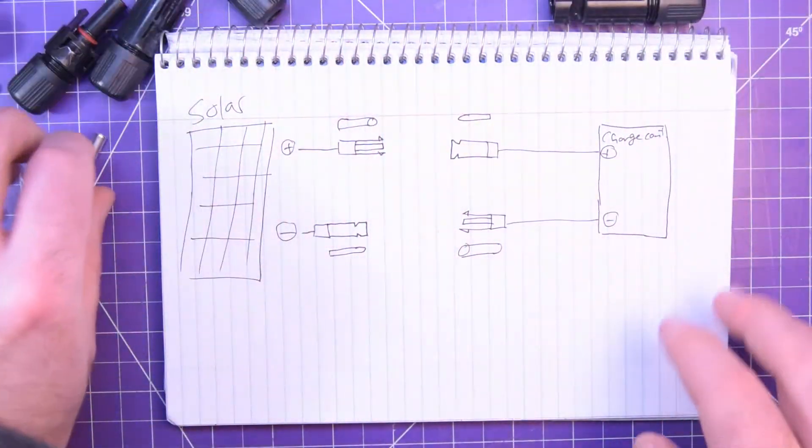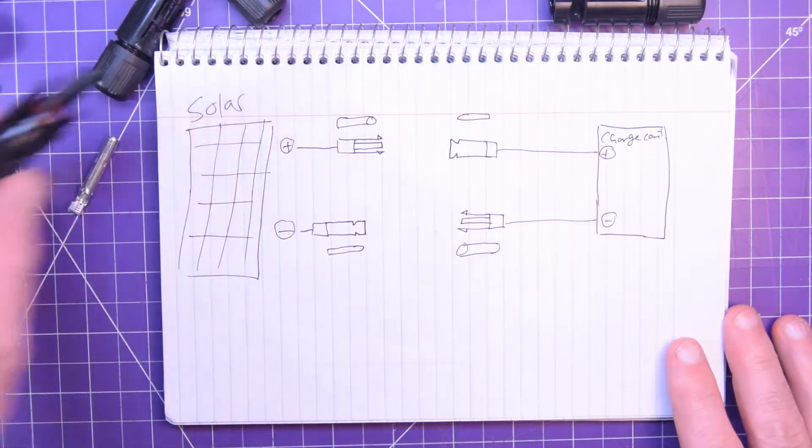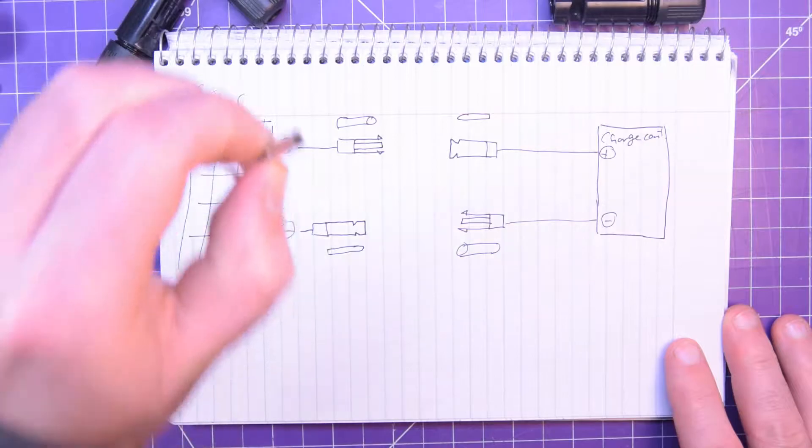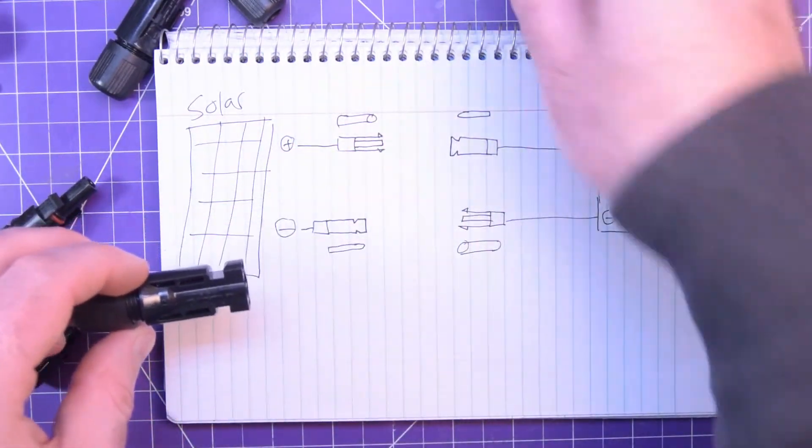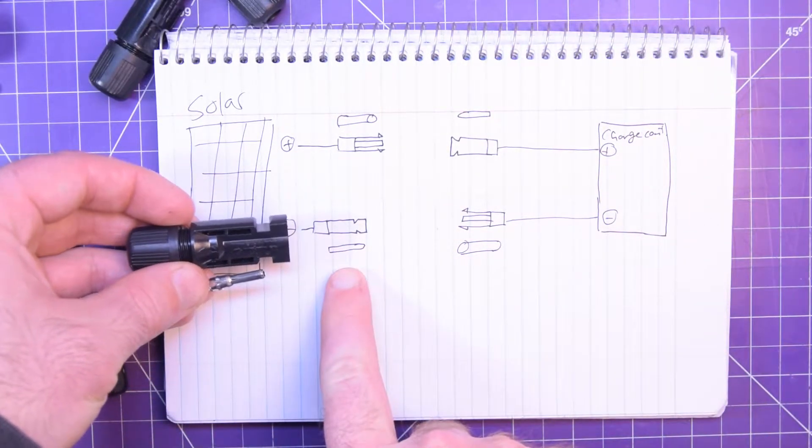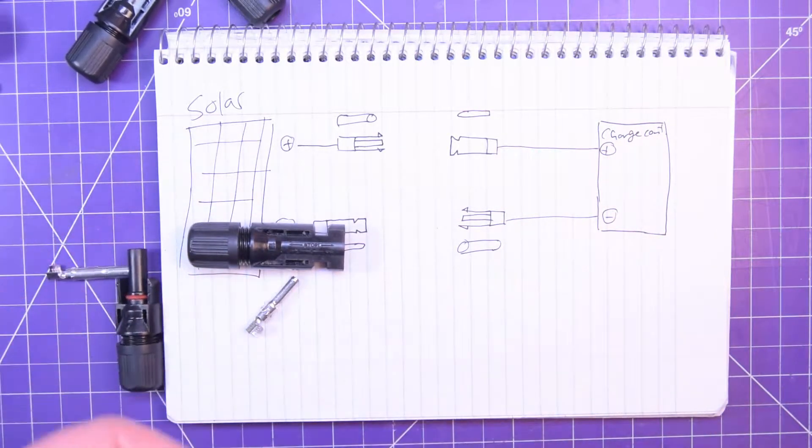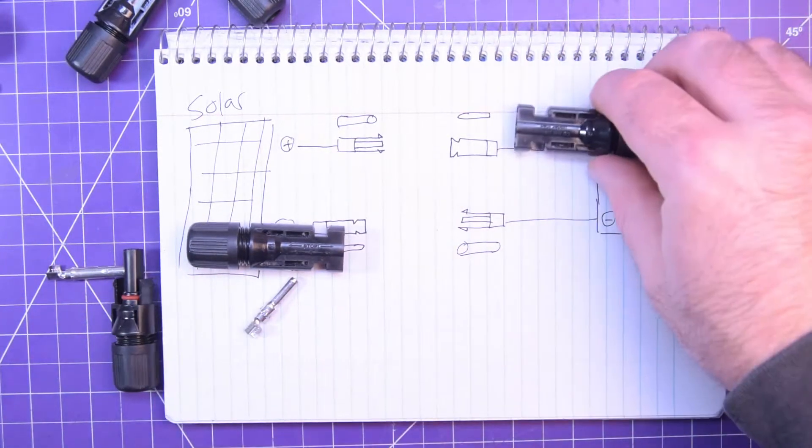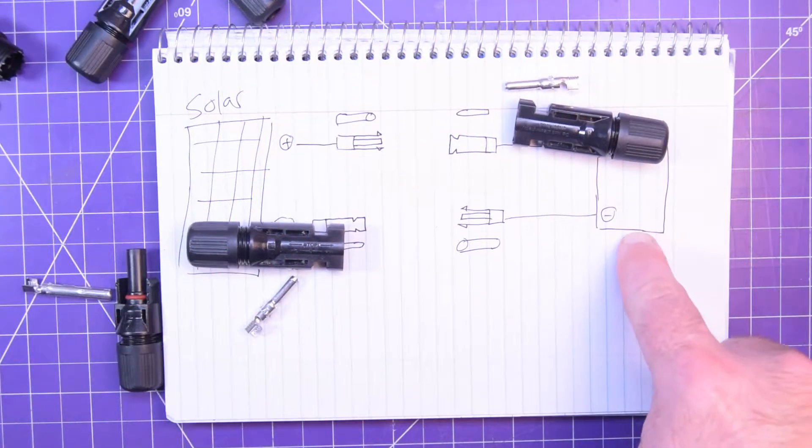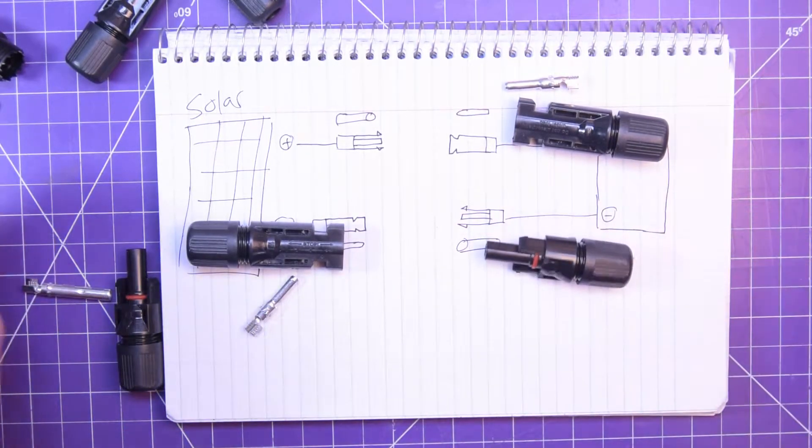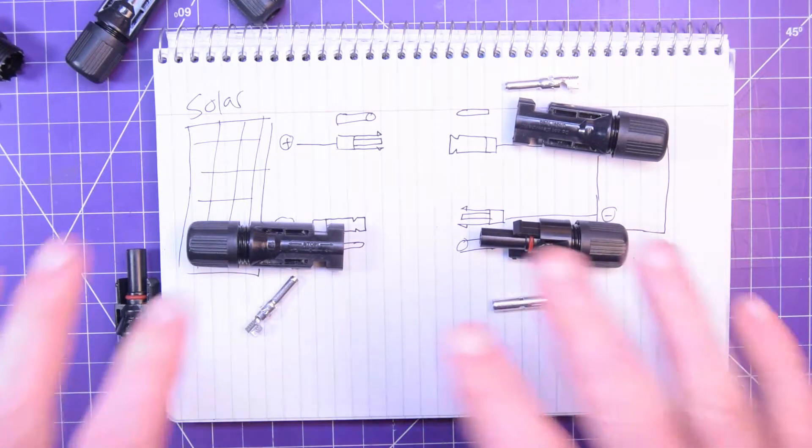So I made this diagram here to help you out. Solar panel positive will be this guy with a cylinder on the inside. And then solar panel negative will be this guy with a pin on the inside. And then your charge controller positive should be this guy here with a pin on the inside.